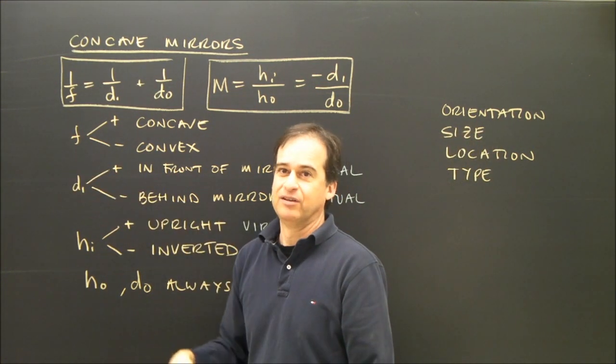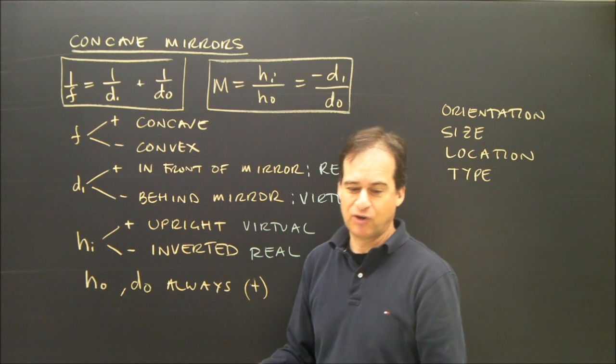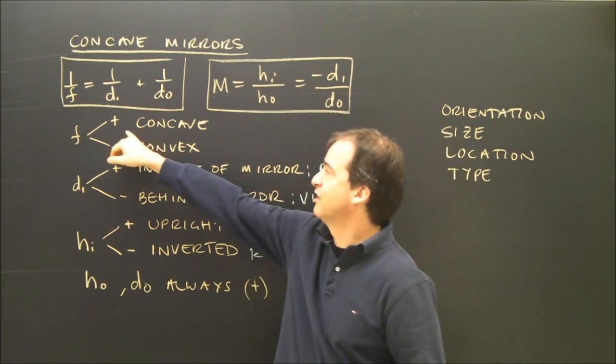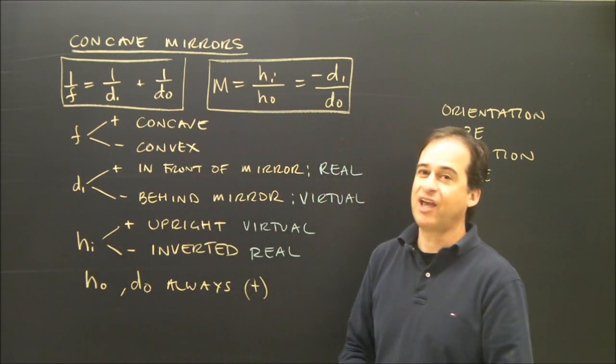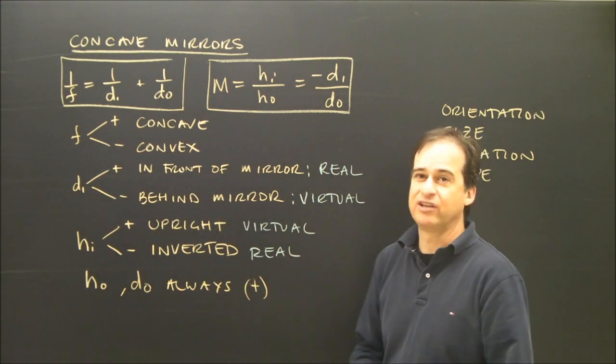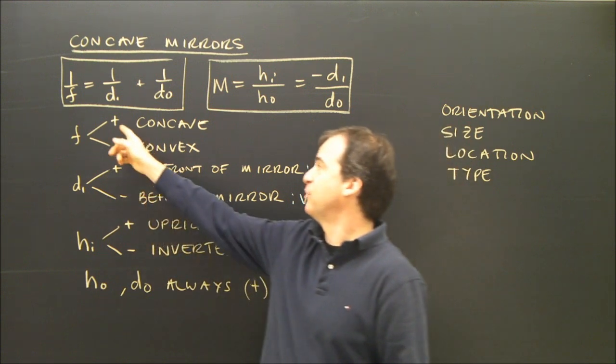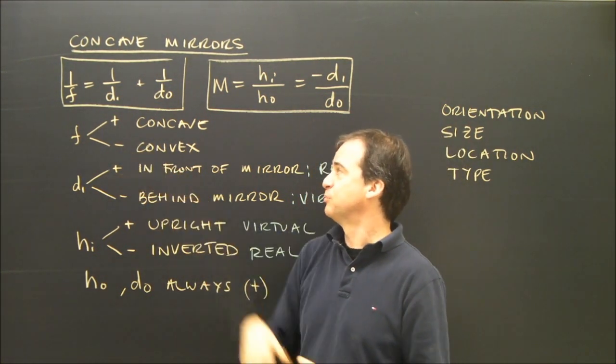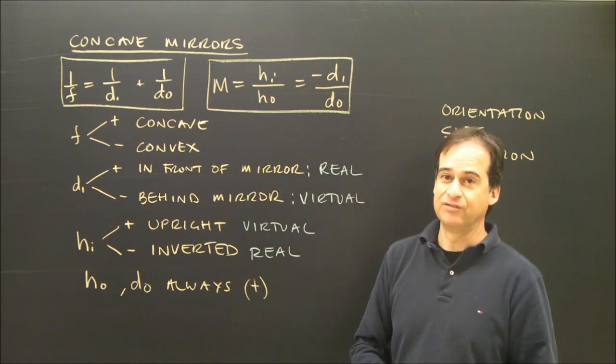The focal length. Well, most of the time we think of a curved mirror, we think of a curved mirror concave. So that's a sign of positive. If the question says you have a concave mirror with a focal length of 10 centimeters, you have to put a positive sign in front of that. If it says convex, you must put a negative sign in front of that.